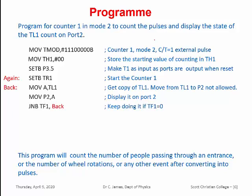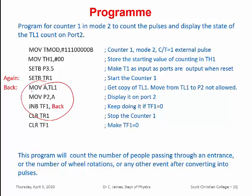Now test whether the terminal count is reached. The TF1 flag will be set when the counter overflows. Till then, this particular loop repeats. The next instruction is CLR TR1, to reset or stop Counter 1. Then we also reset the TF1 flag. Again the program goes back to the counting process to be repeated, restarting the counter. The counting will repeat indefinitely. This program will count the number of people passing through an entrance, wheel rotations, or any other event after converting it into pulses using sensors or detectors.